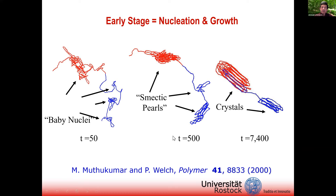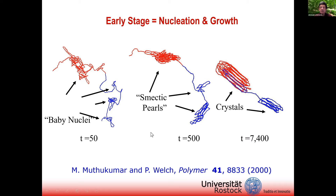Mutokuma illustrated this very nicely based on computer simulations. He showed that even along one single polymer chain, there is a chance that several nuclei develop. There is some competition between nuclei, and finally very few will survive and maybe even fewer crystals will finally grow. Notably, one polymer chain may even be part of two different crystals. This primary nucleation stage is what we are interested in and want to study in more detail.